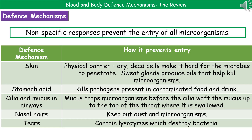If we go inside the body, in your stomach you've got stomach acid, and the idea behind that is to kill any pathogens present in contaminated food and drink, assuming they're in low enough quantities. In the airways, you've got cilia — tiny hair-like structures — and mucus. The mucus traps microorganisms, and then the cilia have a wafting motion that moves the mucus up to the top of the throat, where it's swallowed into the stomach acid and bacteria and pathogens are killed.